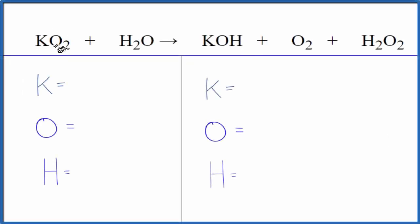In this equation we have KO₂ plus H₂O. This is potassium superoxide, sometimes called potassium dioxide, plus water. To balance this, we can count the atoms up on each side. This is not a real easy equation for us to balance, so let's try it.